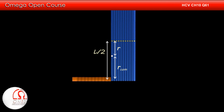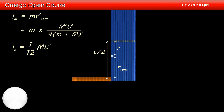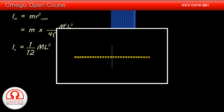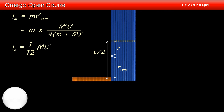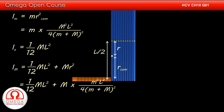The moment of inertia of the particle about the axis is m times distance squared, giving m · M²L² / (4(m+M)²). The moment of inertia of the rod about the axis passing through its own centre is (1/12)ML². Applying the parallel axis theorem, the moment of inertia of the rod about the axis passing through the centre of mass of the system is (1/12)ML² plus M times the distance between the axes squared, giving (1/12)ML² + M · m²L² / (4(m+M)²).